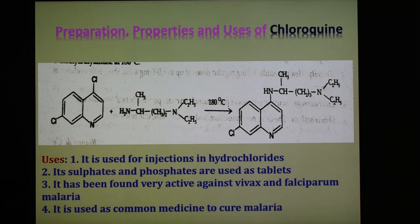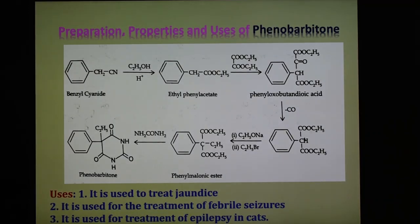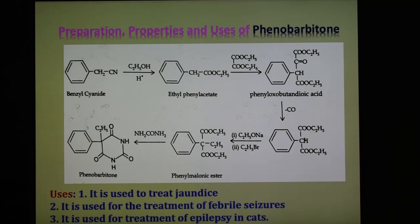The next drug is phenobarbitone. The synthesis of phenobarbitone involves four steps as shown in the slide. First, benzyl cyanide is ethanolized to give the ethyl ester of phenylacetic acid. After that, it is reacted with diethyl oxalate to give the diethyl ester of phenyloxo-butanedioic acid. Then, on heating, it loses carbon monoxide, forming phenylmalonic ester. Phenylmalonic ester then undergoes ethylation, and after cyclization with urea, we obtain phenobarbitone.